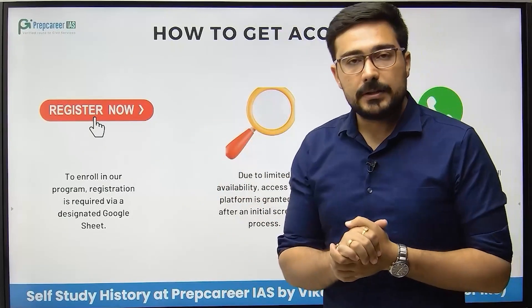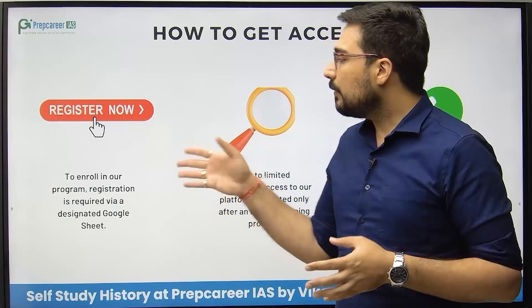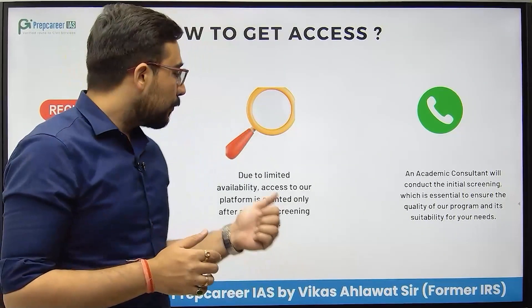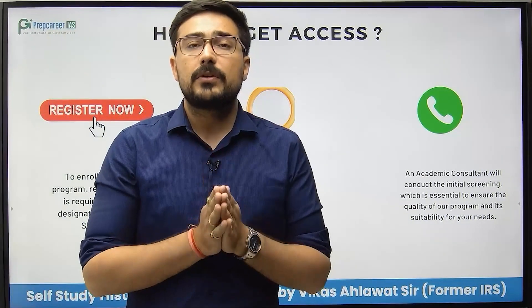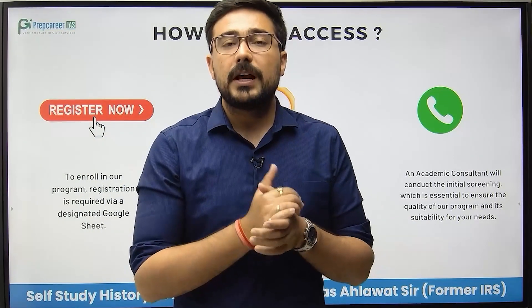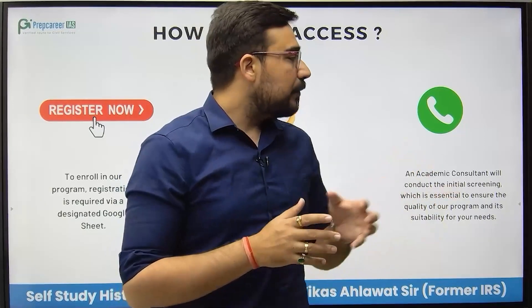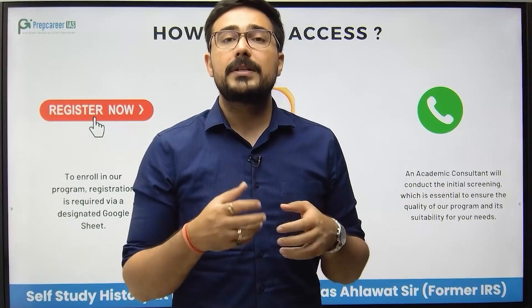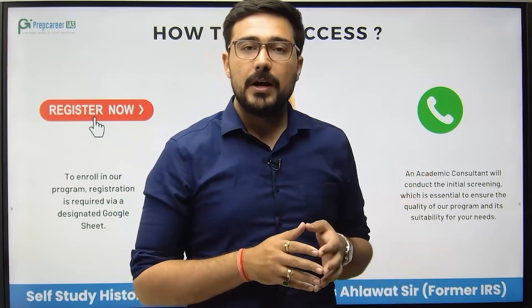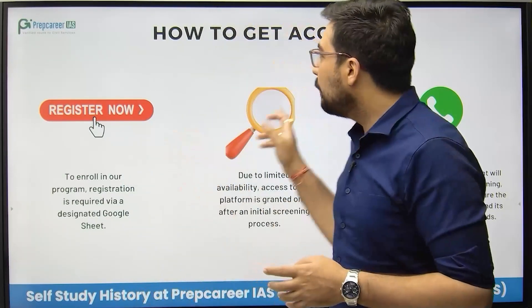To register, fill in the specific Google Sheet. There are limited slots available, so you will get a call from an academy counsellor as part of a screening process. The counsellor will understand your requirements — whether you are in your first, second, or third year of college, or have been preparing for some time and not getting the desired result. Based on this screening, you will get the benefit of the program.